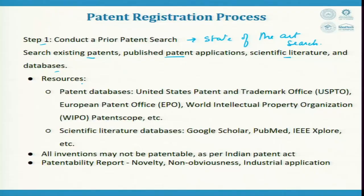The resources for patent search include the United States Patents and Trademark Office. USPTO is one database where you can search all US-based patents. Then there is EPO, the European Patent Office, and WIPO, the World Intellectual Property Organization, and PatentScope, among several search engines that are available.